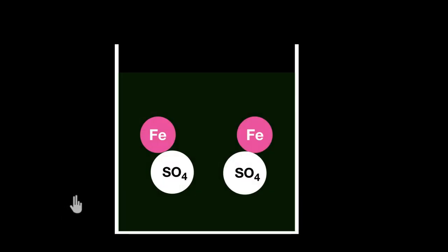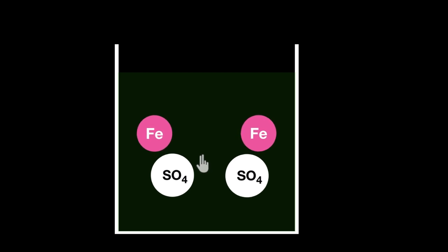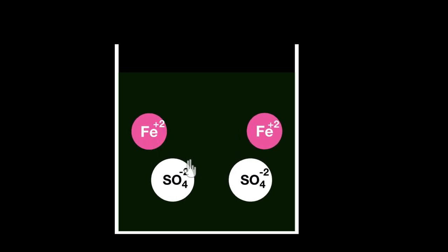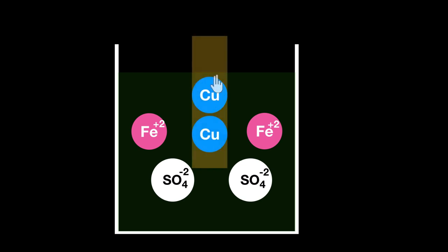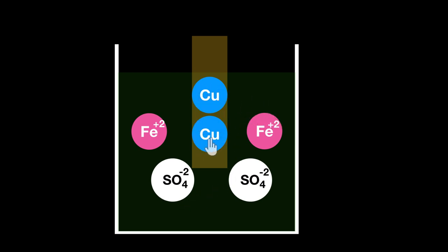In the opposite case — copper in iron sulfate solution — iron sulfate dissociates into Fe²⁺ and SO₄²⁻ ions. When a copper rod is placed in, there is no reaction. The Fe²⁺ ion is already stable and does not want electrons, so it won't take electrons from copper. Iron sulfate remains in solution and the copper atoms stay in the rod.